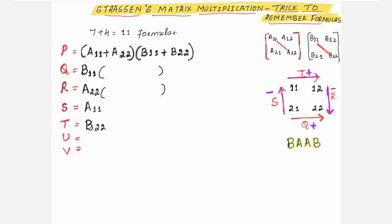Inside the bracket, write the expression for each variable. If the outside term is with B, the inside expression will be with A, and vice versa. For Q: outside is B, so inside is A. Q is from left to right, giving A21 and A22, and the sign is plus. So Q = B11(A21 + A22). For R: outside is A, inside is B. R is top to bottom, giving B12 and B22, with minus sign. So R = A22(B12 - B22).